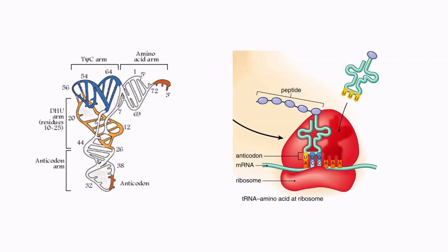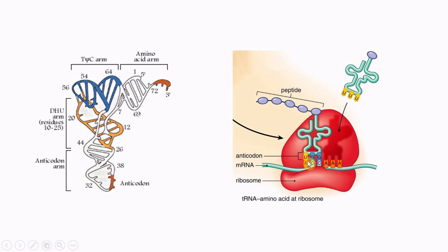In the cell, the 3D structure of the tRNA is known as the cloverleaf structure, as you can see in the right diagram. tRNA carries the amino acid and binds with the codon sequence of the mRNA. The ribosome, shown in red, consists of rRNA. The mRNA runs through it, and the tRNA serves as an adapter between the amino acid and the codon sequence of the mRNA.